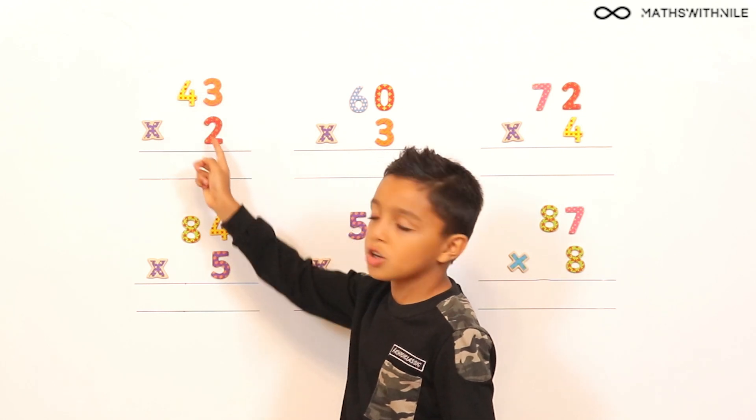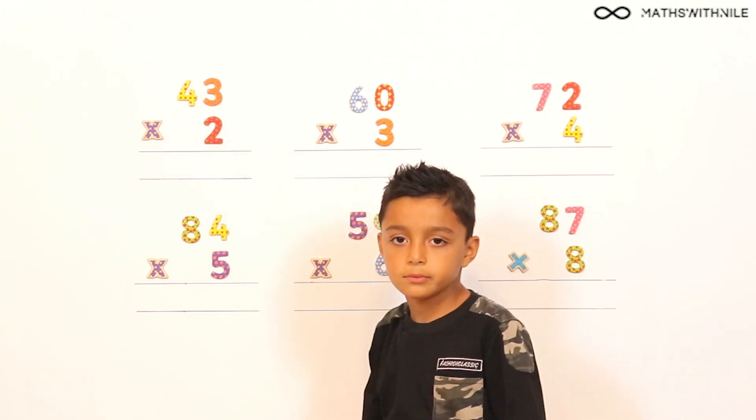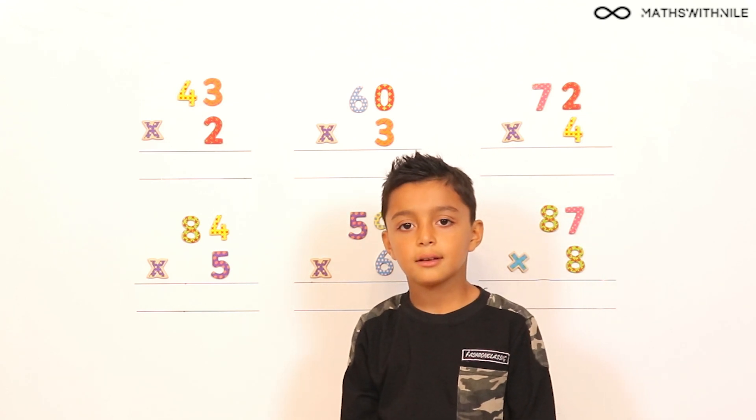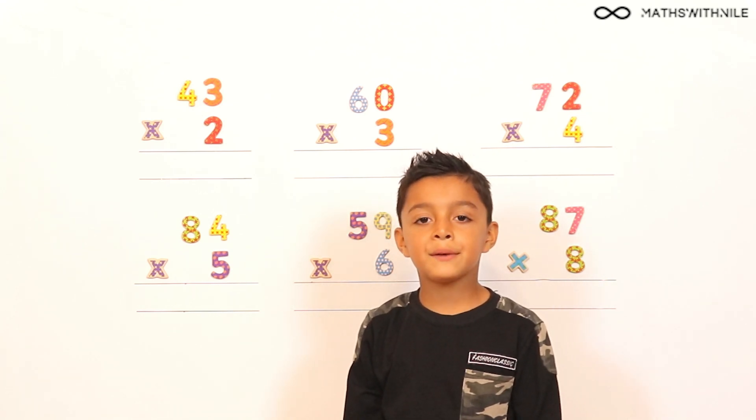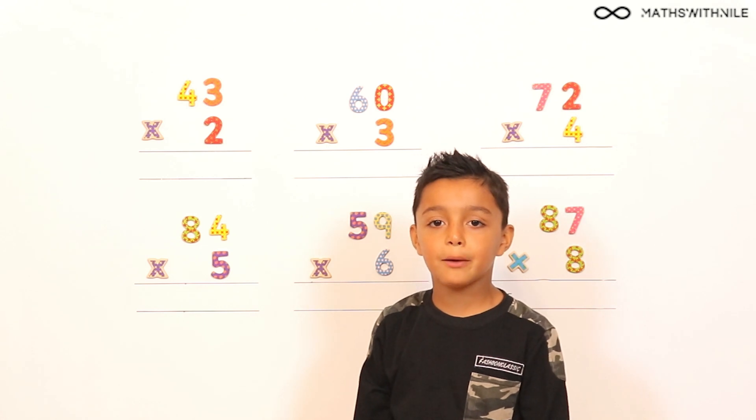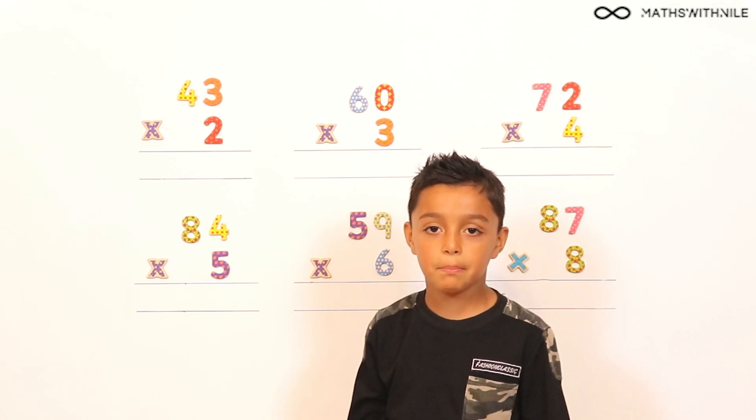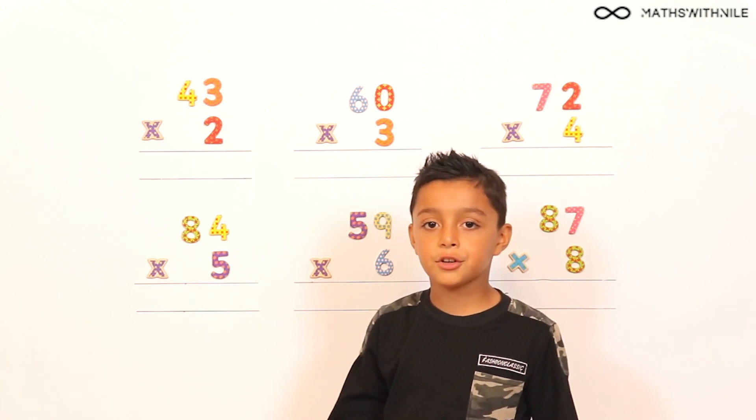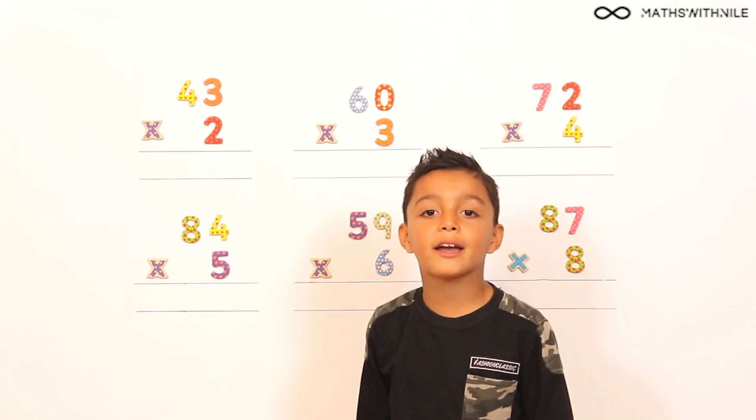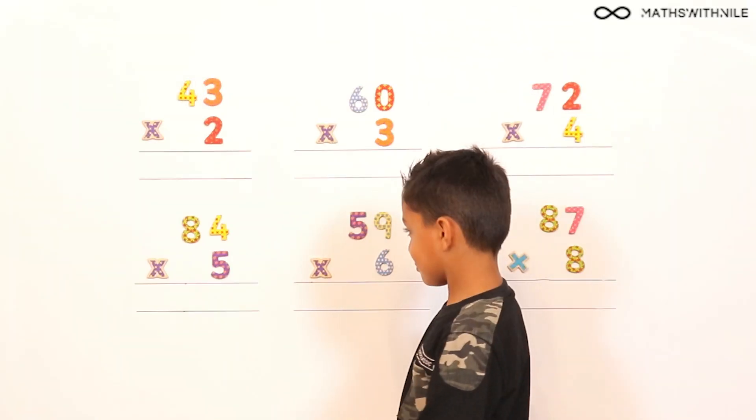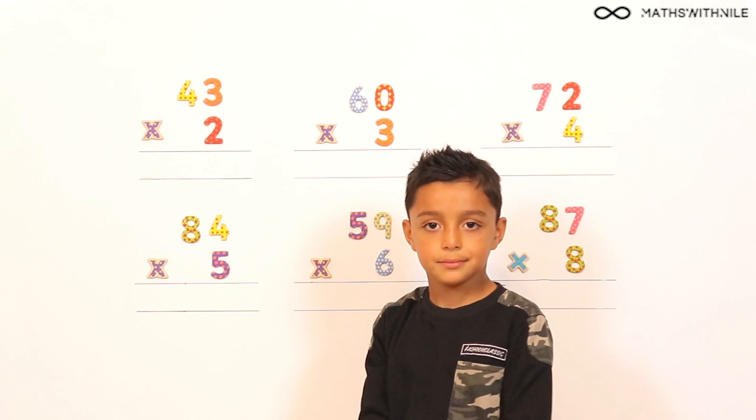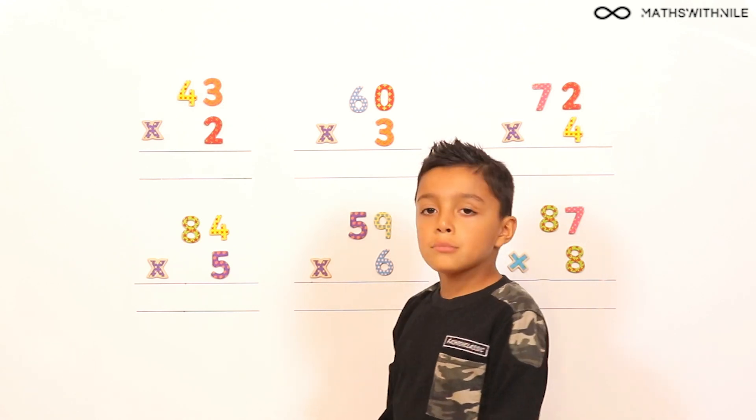43 x 2. And before you start working on that question, have you got any message to the kids watching us from home? If you like, you can get a piece of paper and a pencil or a whiteboard and a whiteboard pen and you can do the questions with me and try and get them right. Can you repeat that first question again? 43 x 2. So what are you going to do now?